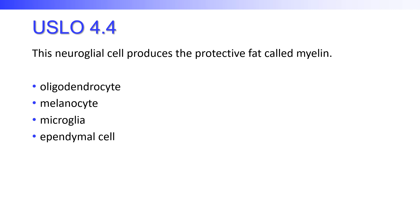This type of neuroglial cell produces the protective fat called myelin. Is it the oligodendrocyte, the melanocyte, the microglia, or the ependymal cell? The answer is the oligodendrocyte.